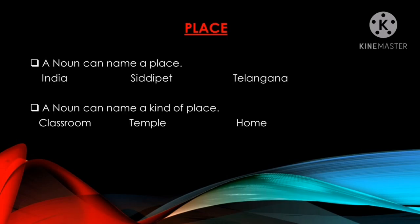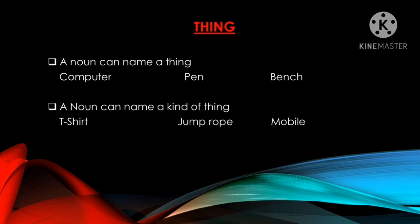A noun can also name a kind of place. For example, classroom, temple and home. Now let's go to another naming word that describes a thing.